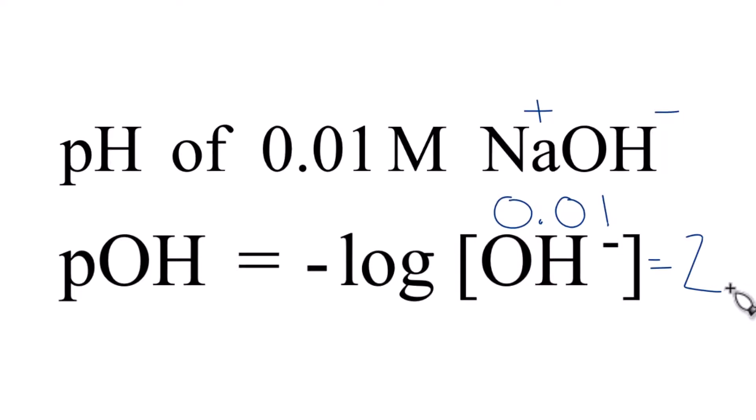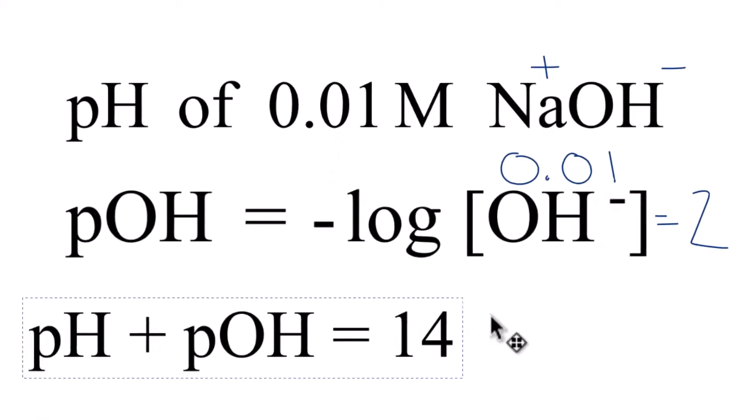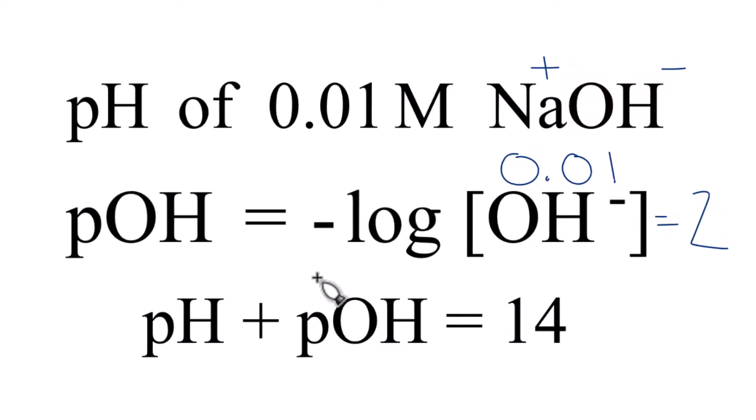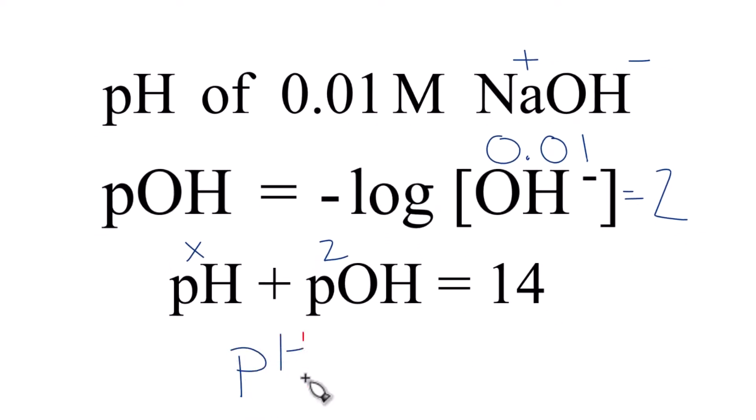Now we can find the pH of this 0.01 molar solution of NaOH. We'll use this formula right here. pH plus pOH equals 14. And we said we know the pOH, that's 2. So some number plus 2 equals 14. 12 plus 2 equals 14. So the pH, that equals 12.